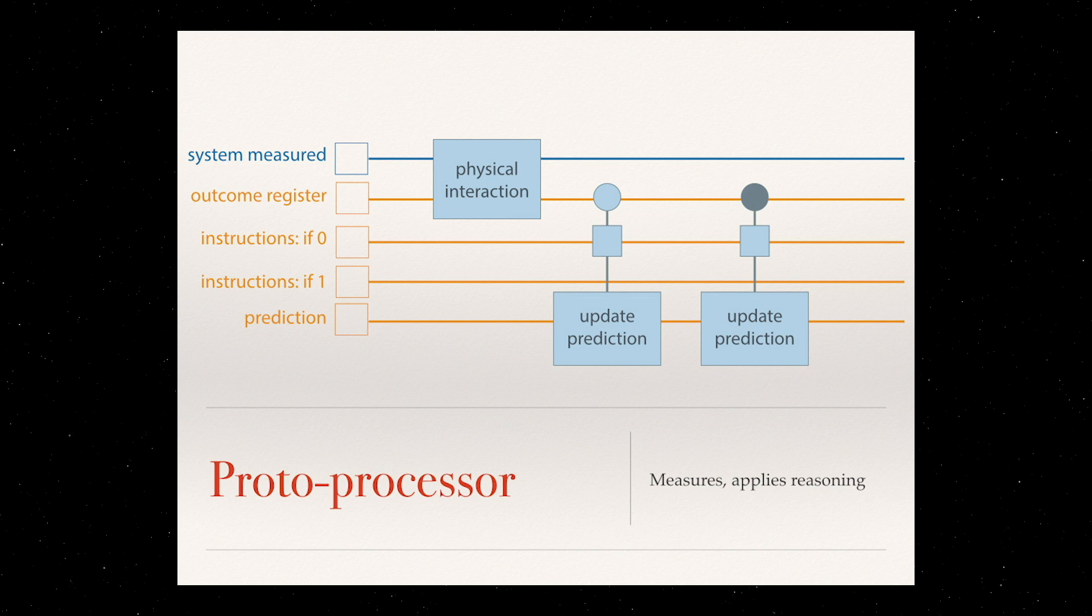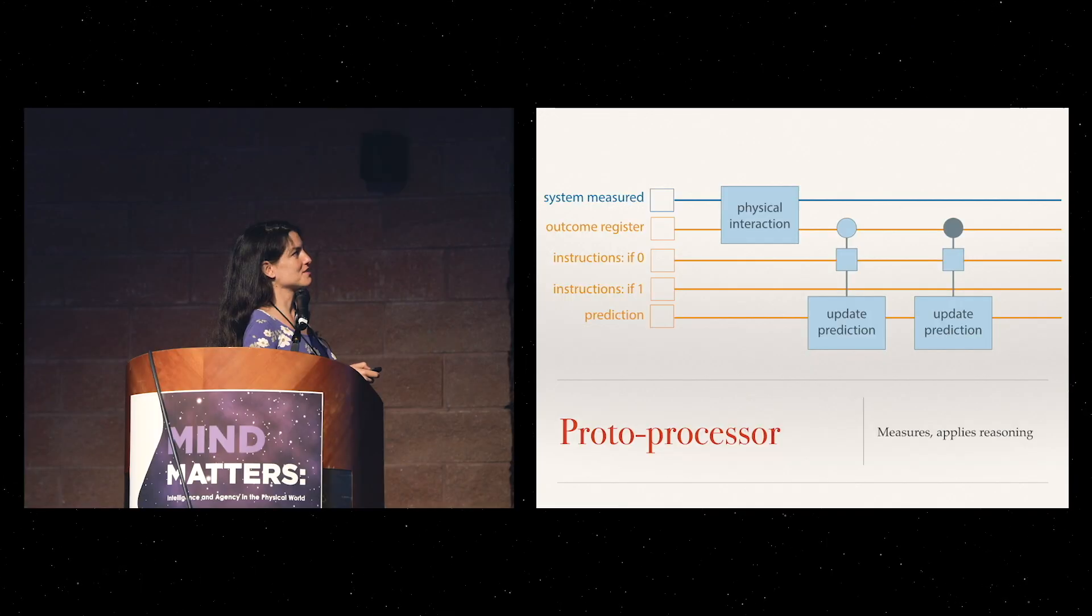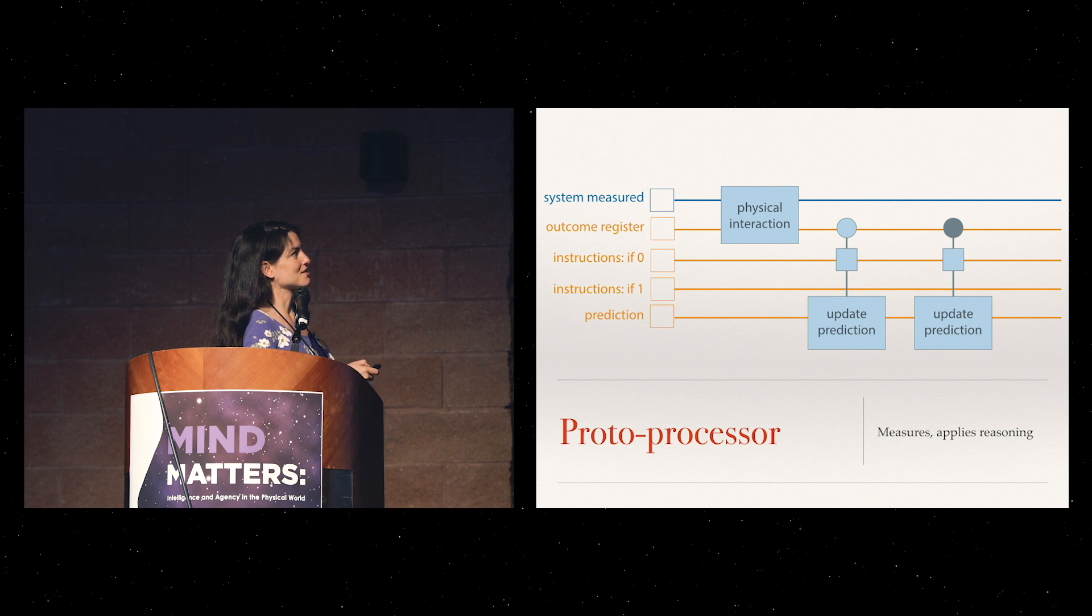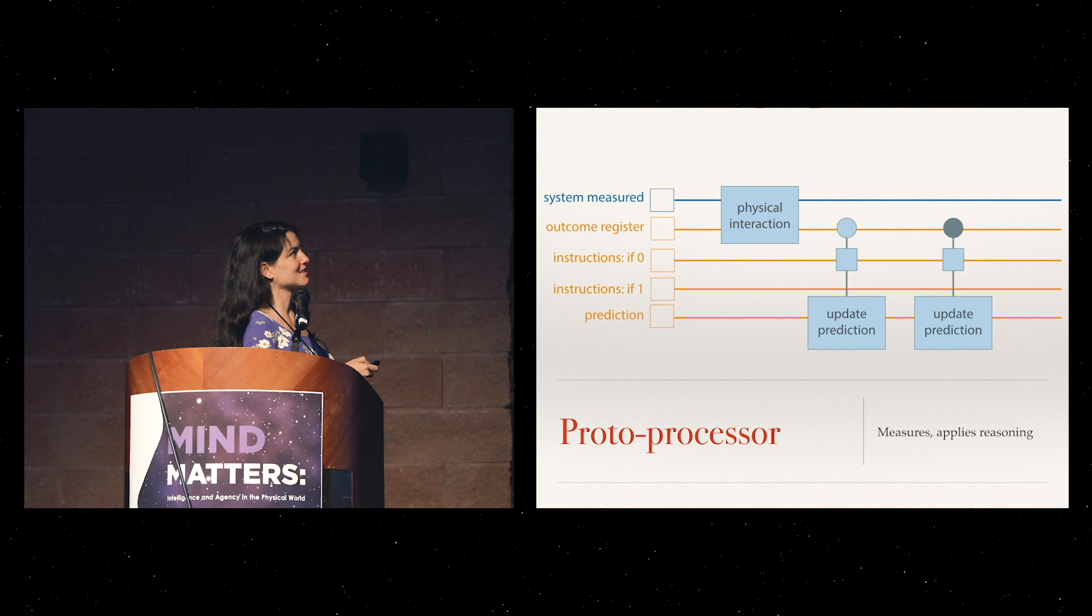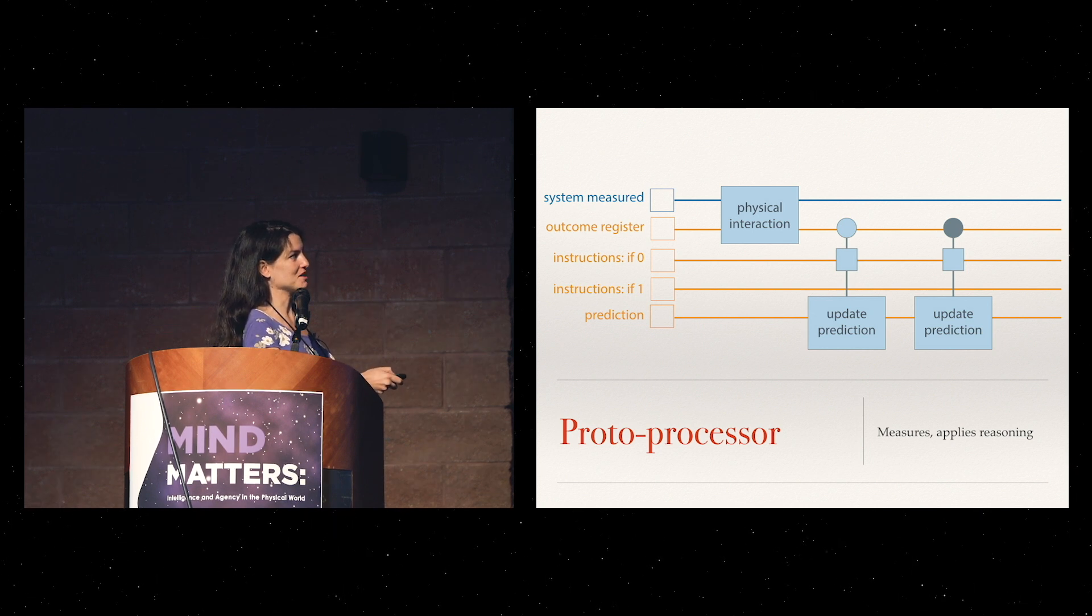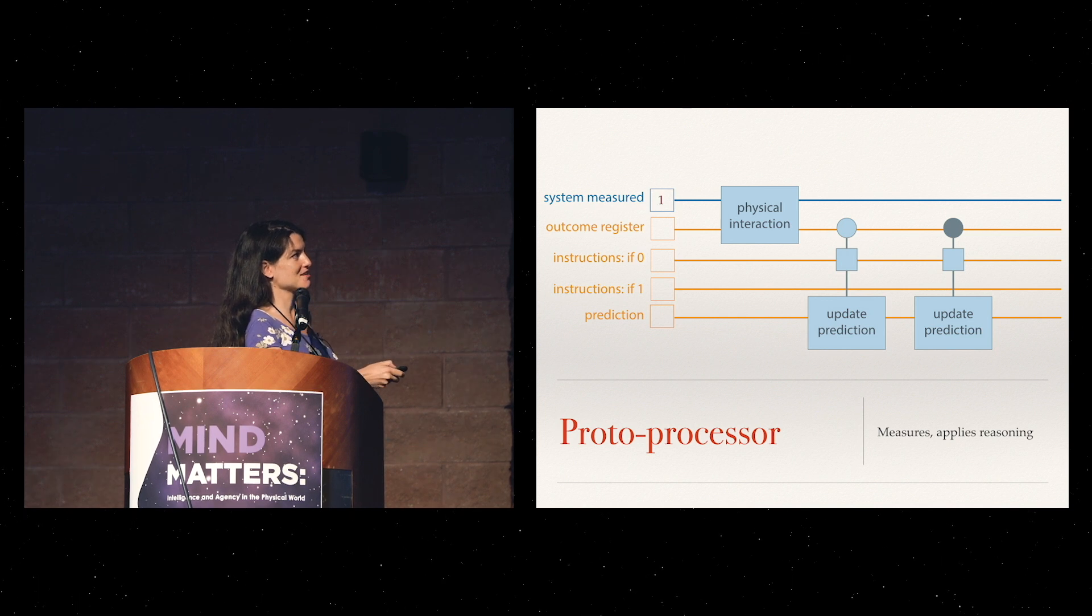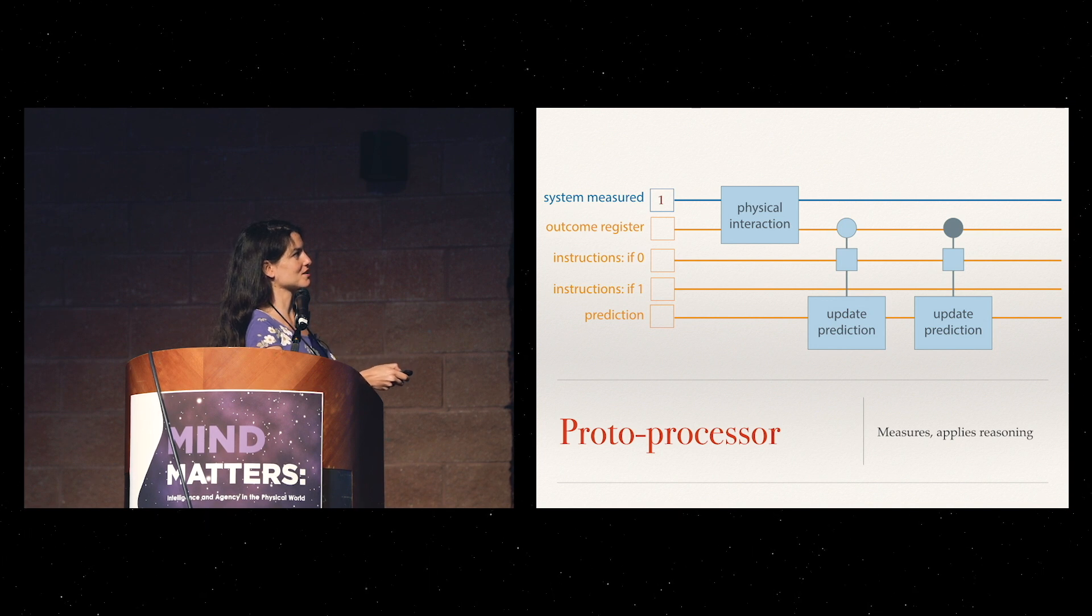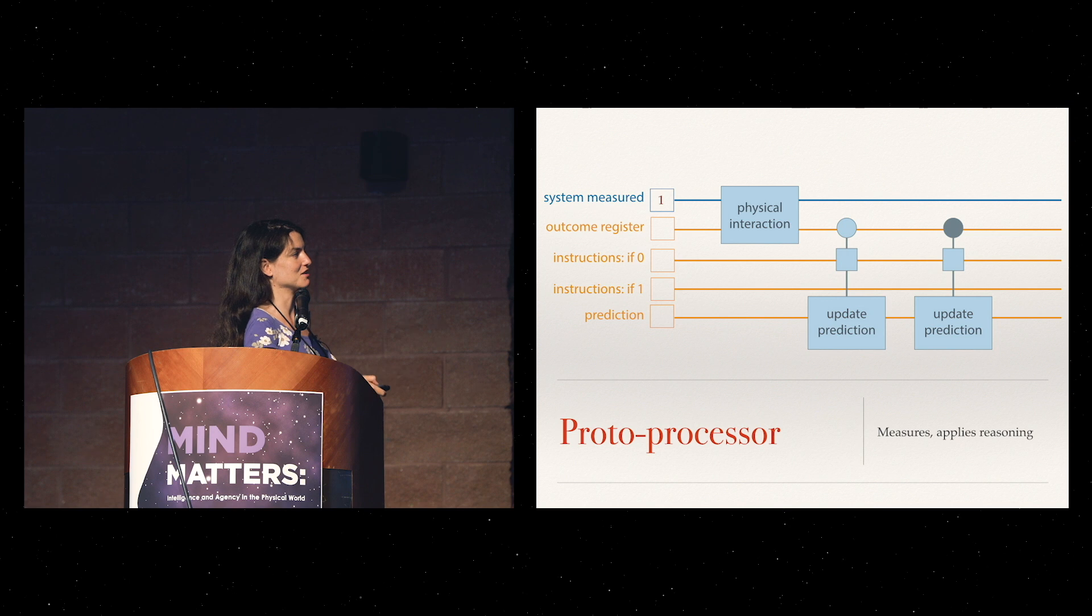It goes and checks, well, if this is a zero, then I should do whatever says, I go check what's in these instructions to do if it's zero, and then I update my prediction or my action here. If it's a one, I check that it's a one. Oops, this square should be here. I'll go check what these instructions say to do if it's a one, and then update the prediction. So let's see an example.